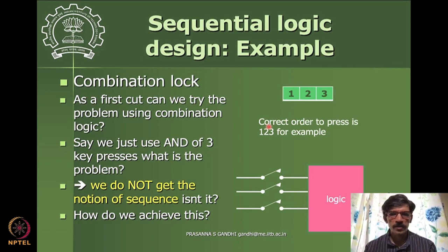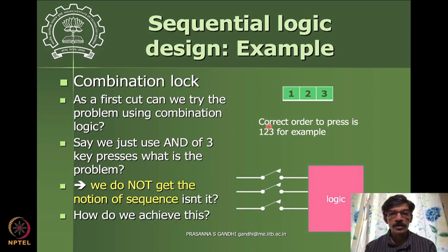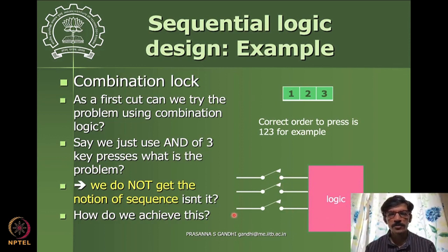Can this problem be solved by combinational logic? If we try using switches — where pressing a key gives a logic one — and connect them with an AND gate, then when all three switches are pressed the lock opens. But this gives no notion of sequence: pressing key two first, then key three, then key one would still satisfy the AND gate and open the lock.